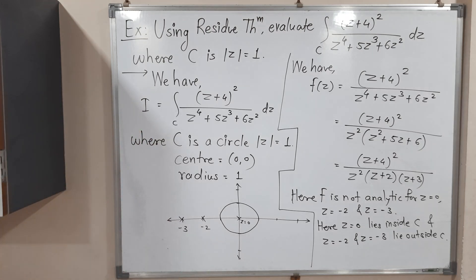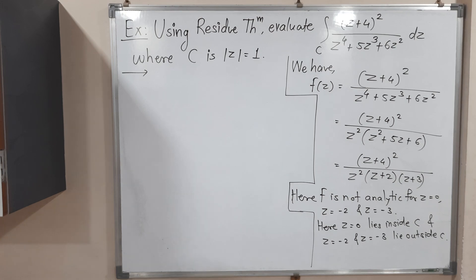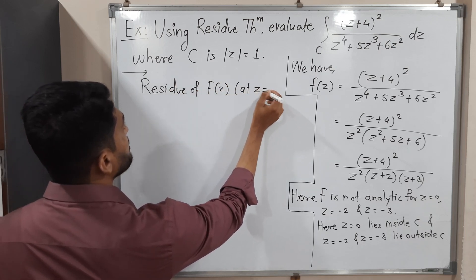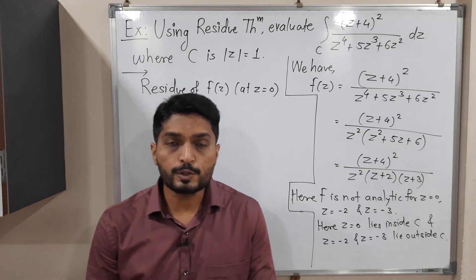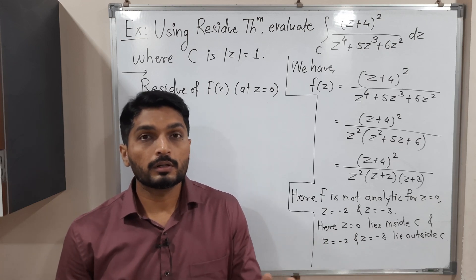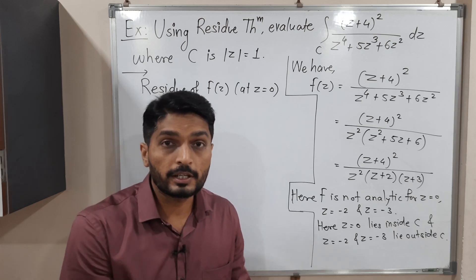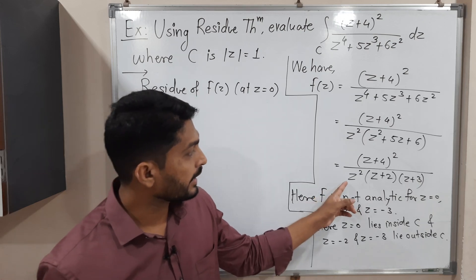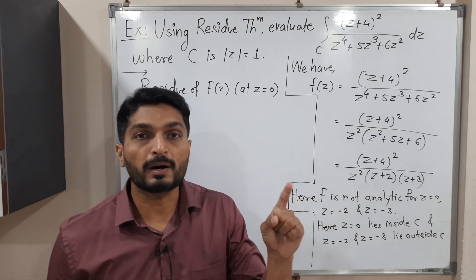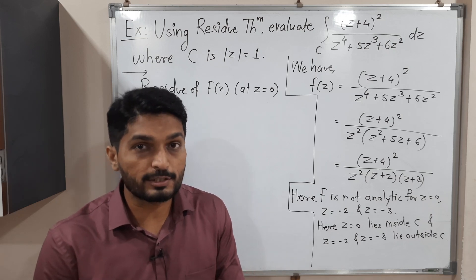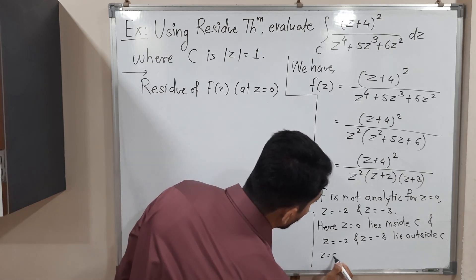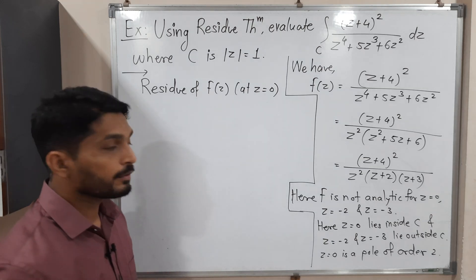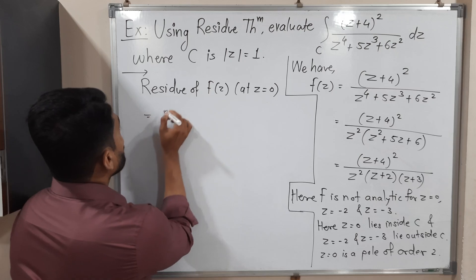We need to find the residue of f(z) at z = 0. The residue formula involves the Laurent series expansion, but there are simpler formulae for poles. z = 0 is a pole of order 2 because z² appears in the denominator. So I will apply the formula for a pole of order n, which is: (1/(n−1)!) × lim[z→0] of the (n−1)th derivative of (z − 0)ⁿ f(z).